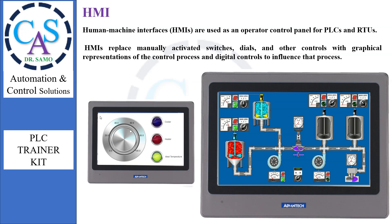HMI — Human Machine Interfaces — are used as an operator control panel for PLCs and RTUs. HMIs replace manually activated switches, dials, and other controls with graphical representations of the control process and digital controls to influence that process. An HMI is a user interface or dashboard that connects a person to a machine, system, or device. While the term can technically be applied to any screen that allows a user to interact with a device, HMI is most used in the context of an industrial process.